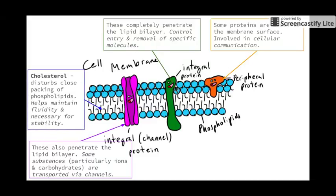Next we have cholesterol. Cholesterol is found among the phospholipids and its job is to disturb the close packing. If the phospholipids were too closely together, the cell membrane wouldn't have the fluid motion it requires to change its shape and transport substances in and out. Cholesterol also helps maintain the stability of the cell.